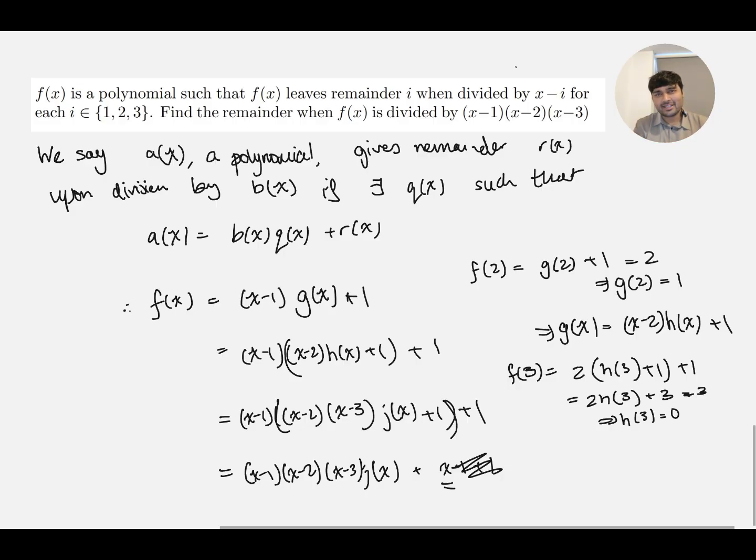Depending on if this was like a TMUA question, obviously you'd have multiple choice. You could perhaps use that to your advantage. But this is the way that I really encourage you to think about questions where they have remainders in. You can use the remainder theorem. You can use the factor theorem. But they're very limited. You really need to understand what we mean when we say a function gives a certain remainder.